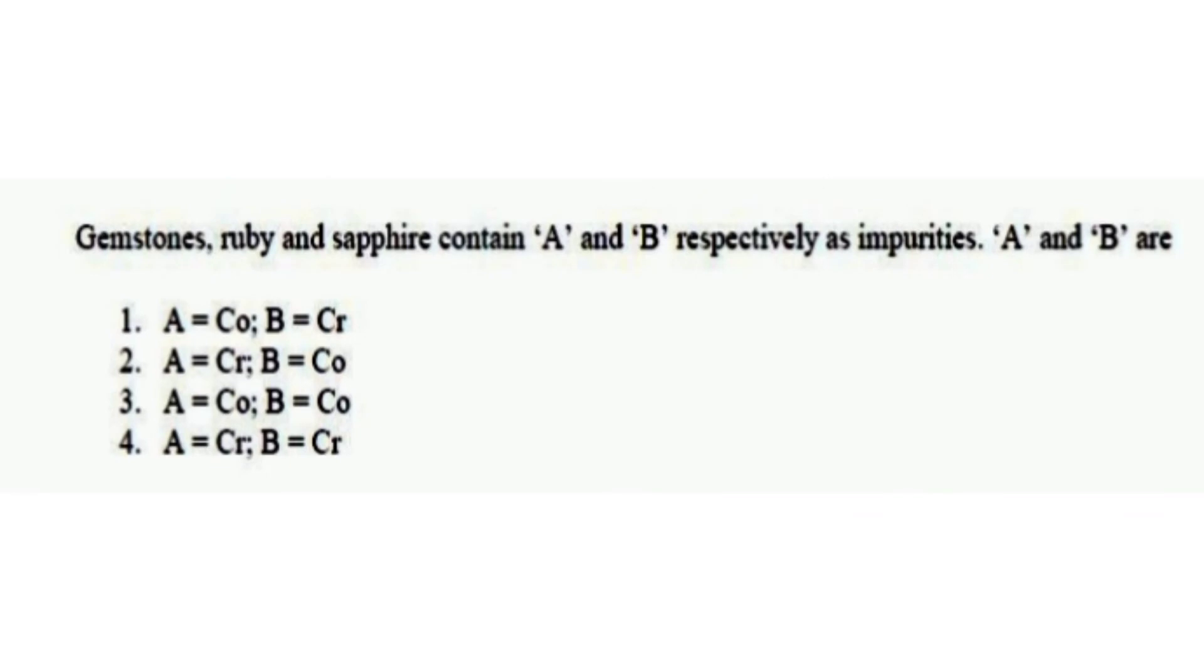Gemstones ruby and sapphire contain A and B respectively as impurities. A and B are? From the options given below, the right one is option number two: A is chromium and B is cobalt.